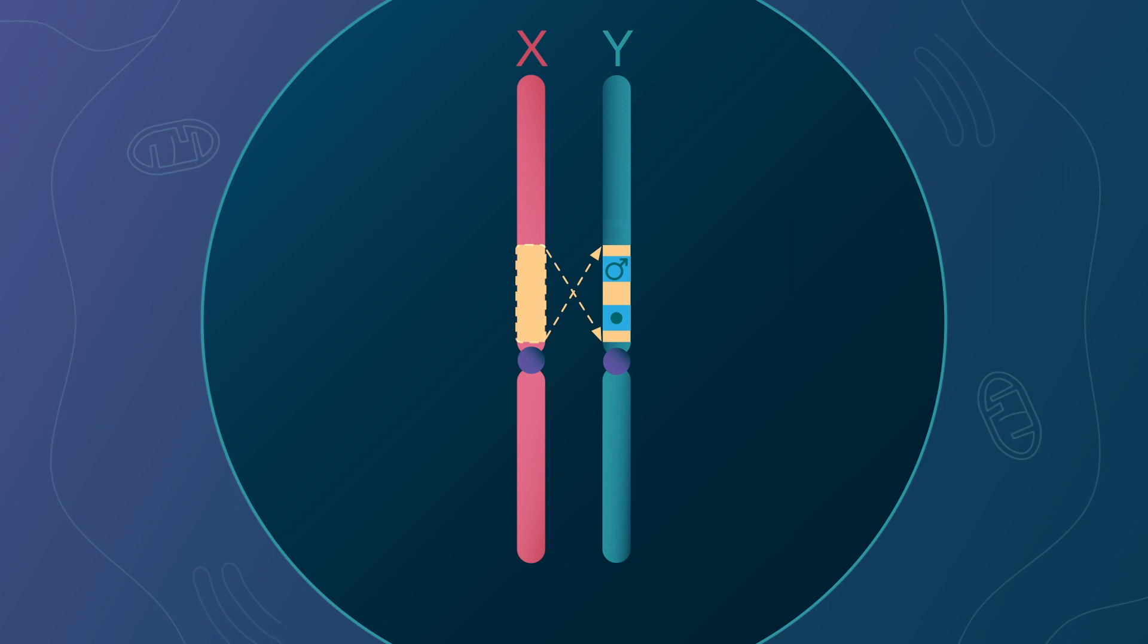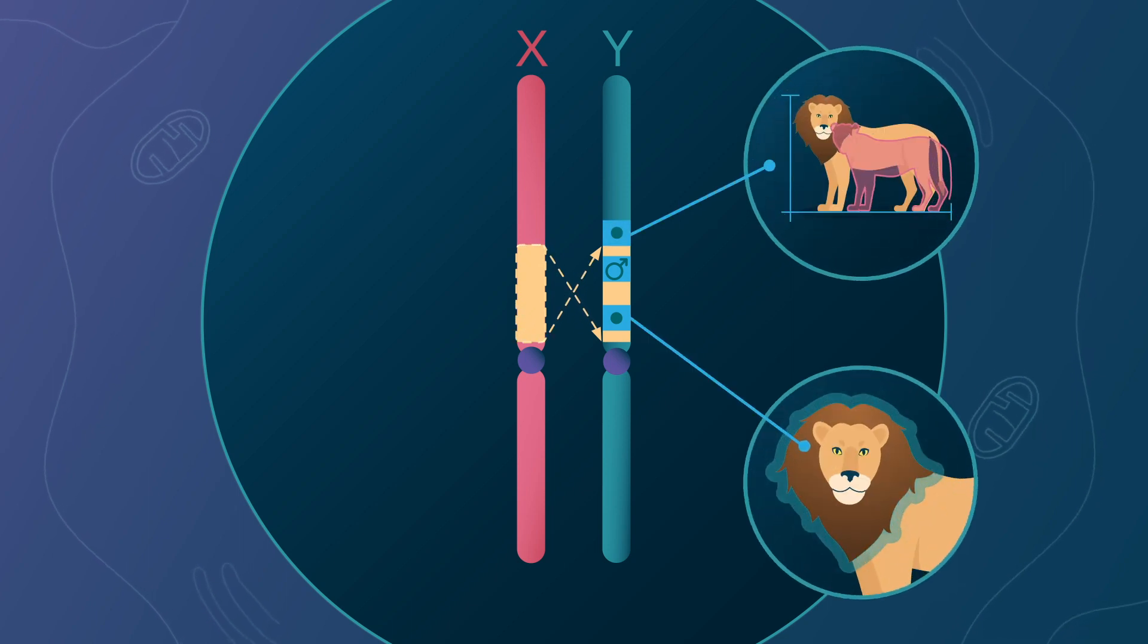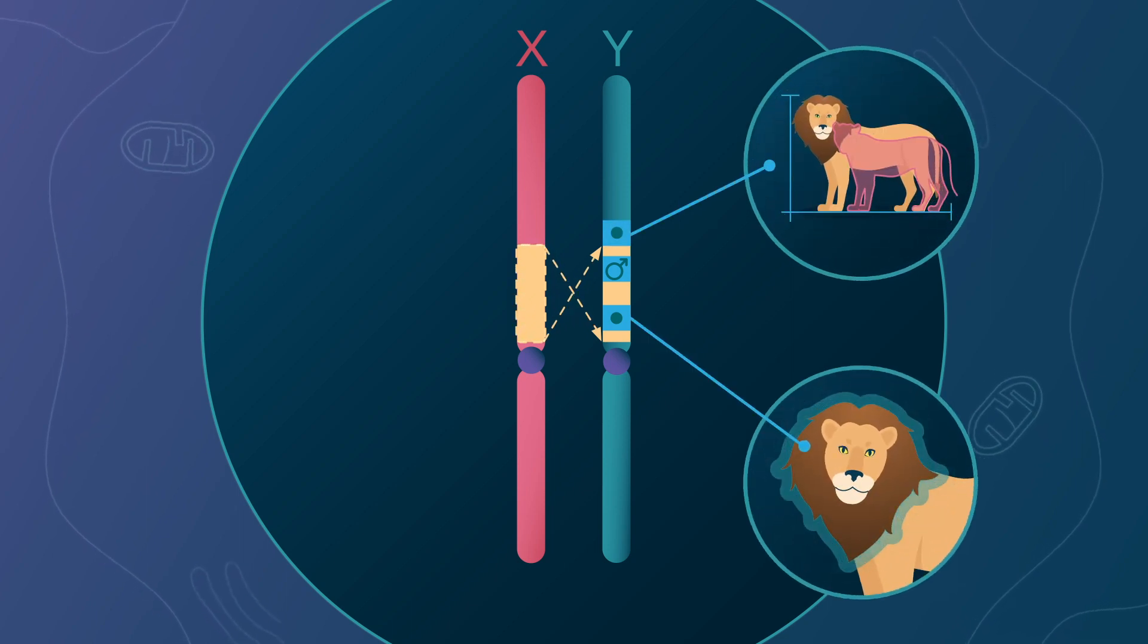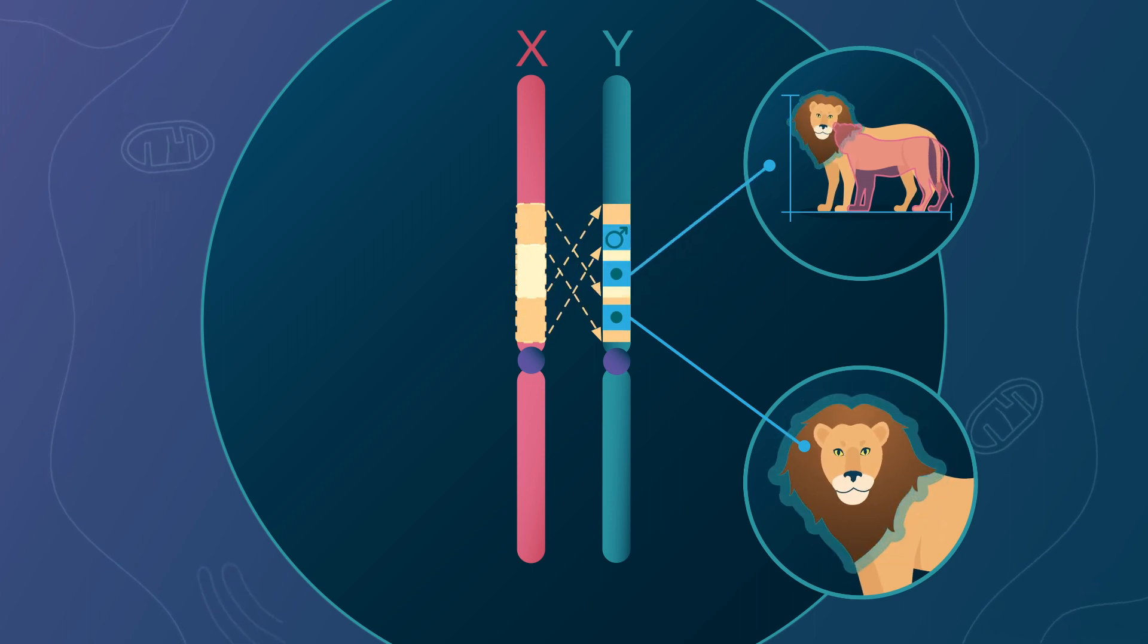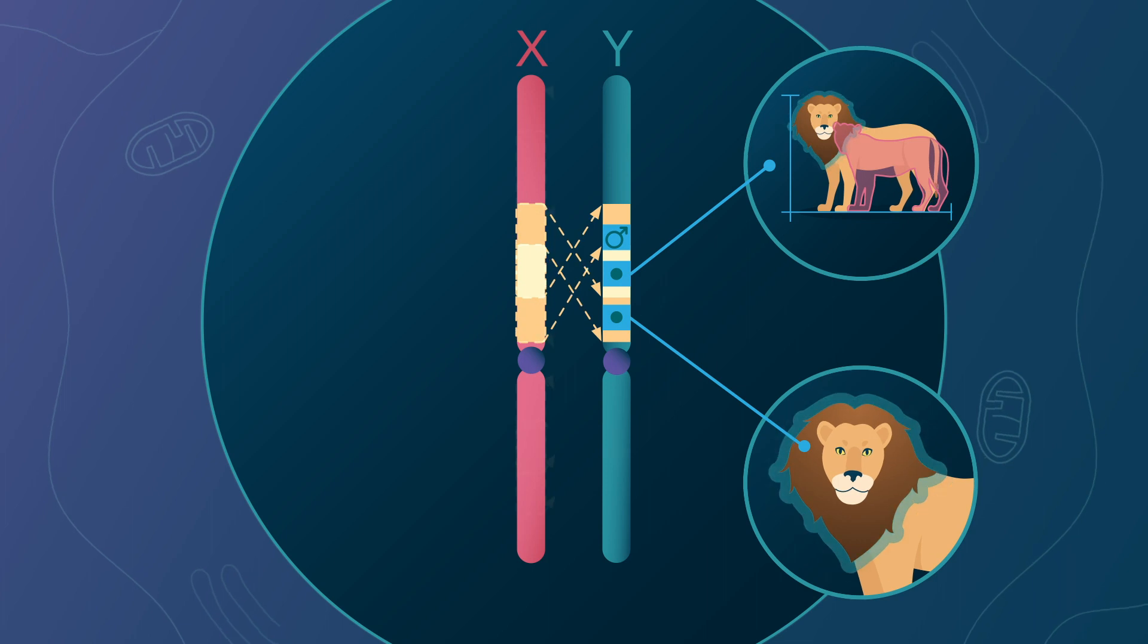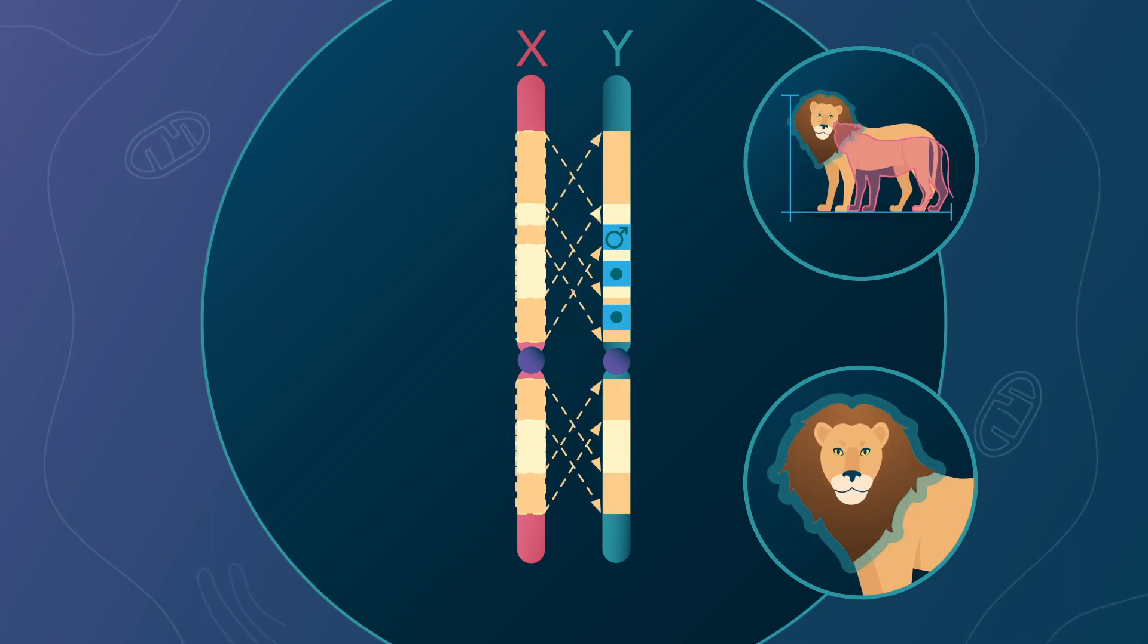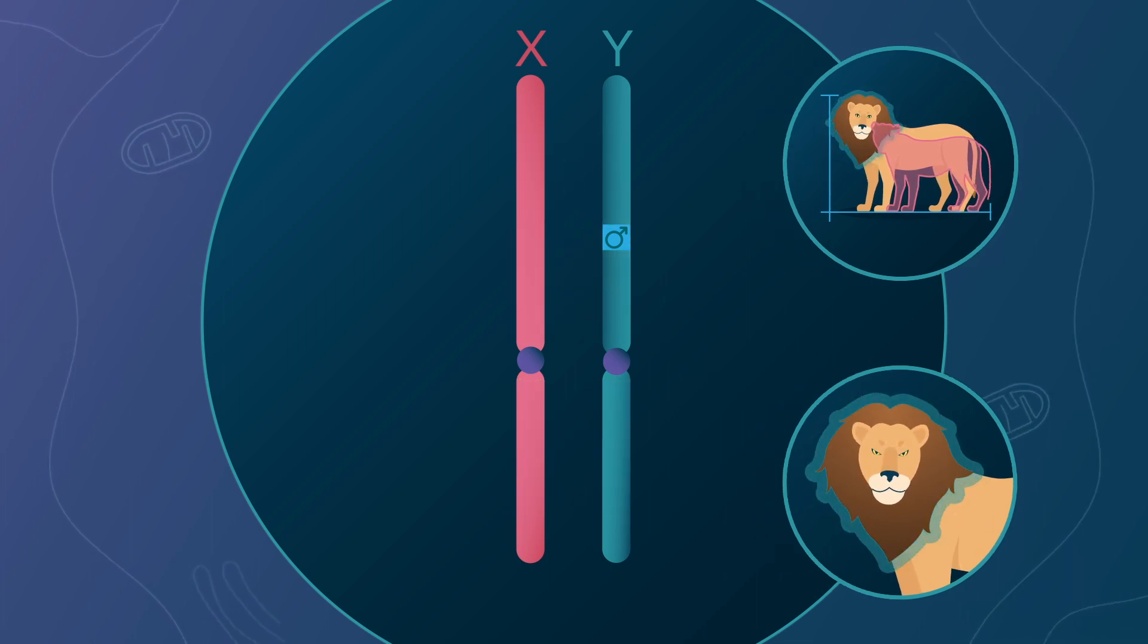With time, if multiple genes become progressively linked to the sex-determining gene on the Y chromosome through successive inversions, the X and Y chromosomes will become more and more differentiated. However, no definitive evidence has been found in favor of this hypothesis.